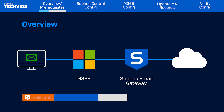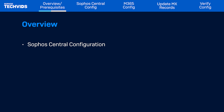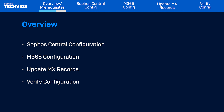Refer to our linked documentation for details about other clients. I'll cover the inbound configuration steps in Sophos Central, the steps in Microsoft 365, then I'll show you how to update your MX records, and finally verify your inbound configuration.